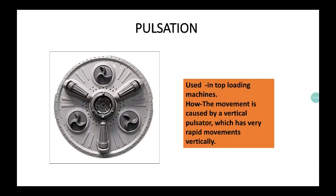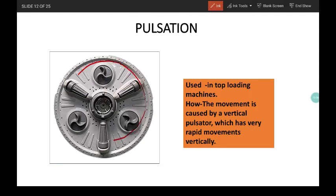Next one is pulsation. It is also used in top loading machines. The movement is caused by a vertical pulsator which has a very rapid movement vertically. Just take a look. One movement taken and halt. Then again another movement. A washing machine may have either agitation movement or pulsation movement.